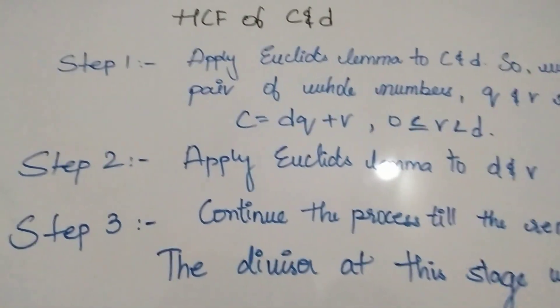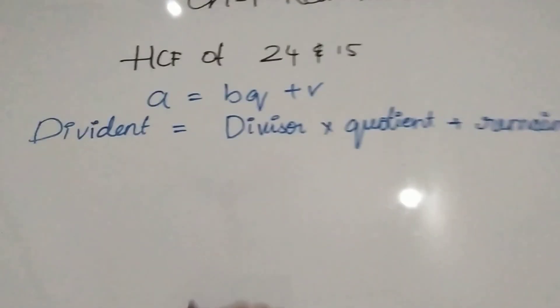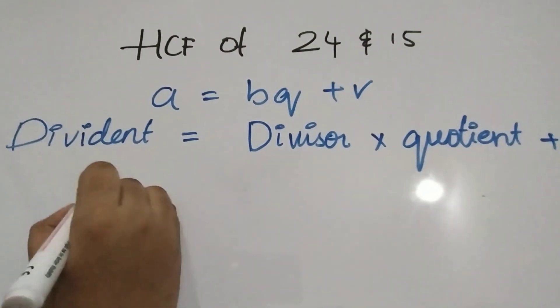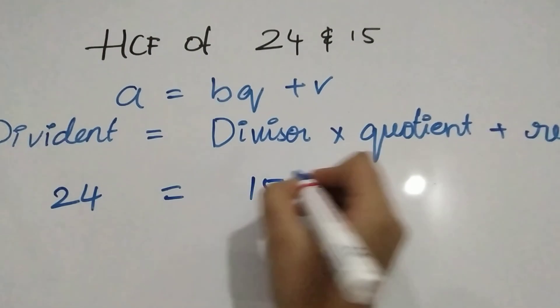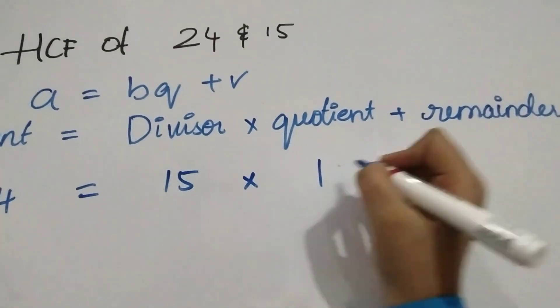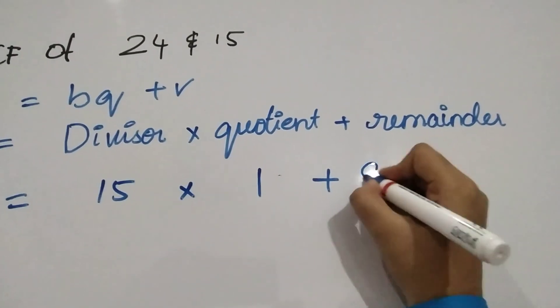Let us now look at one more example. Let us find out HCF of 24 and 15. So dividend here is 24, divisor is 15 and it goes one time, the remainder is 9.